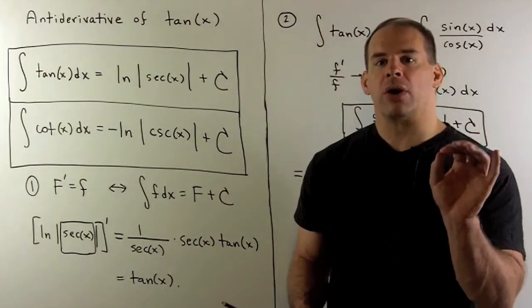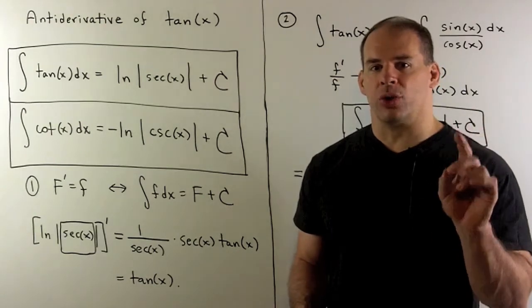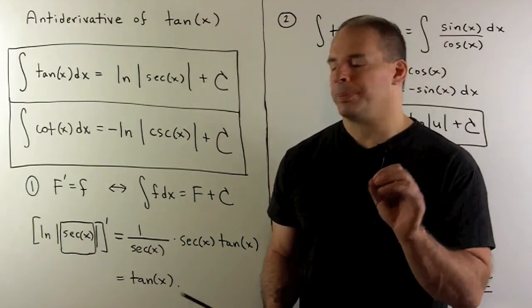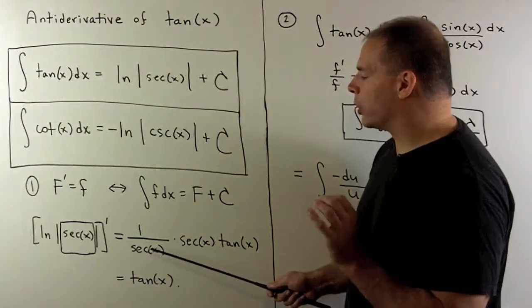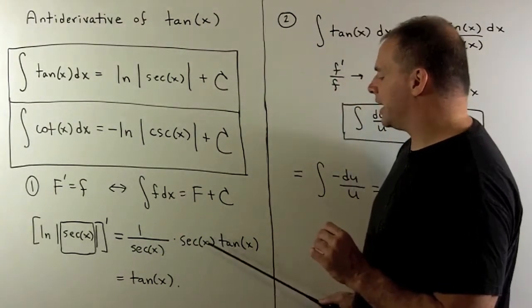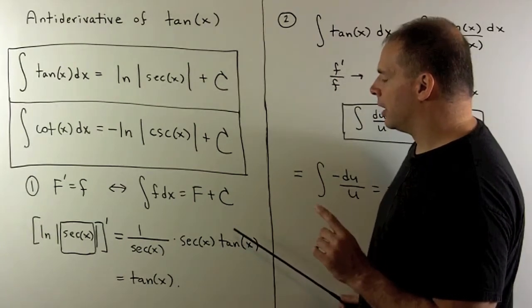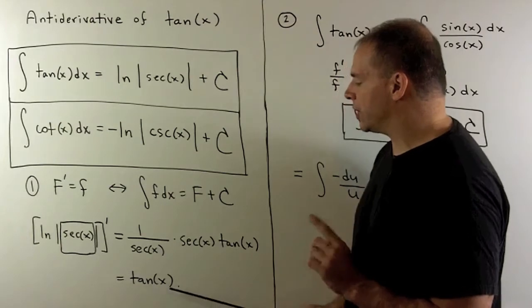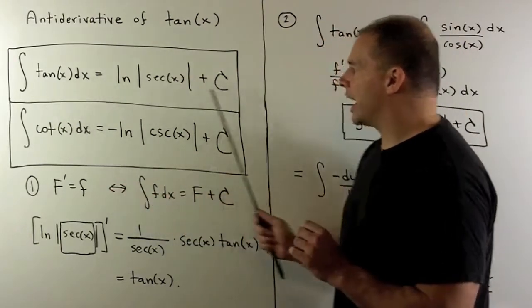We don't fret over the absolute value signs — they're part of the definition of the derivative. So we get 1 over box. I put secant into the box, and then we multiply by the derivative of secant, which is secant x times tangent x. Now we cancel the secants, and we're left with tangent of x. So our formula checks out.